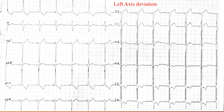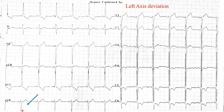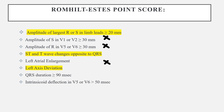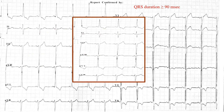For left axis deviation, we can see that there is a negative vector in lead AVF, which is typically present in left axis deviation. So this patient does have left axis deviation, and this criteria is met. For QRS duration, it should be 90 milliseconds or more. The QRS appears slightly broad — not the narrow appearance seen in a normal ECG — and this width measured 90 milliseconds, so this criteria was also fulfilled.